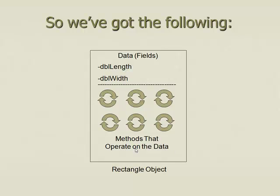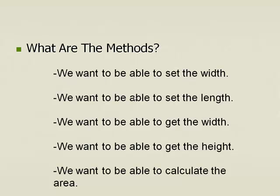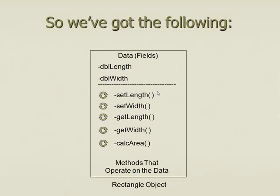Now let's think about our methods that will operate on this data. What are the methods? We want to be able to set the width, set the length, get the width, get the height, and calculate the area. So we've got our setLength method, setWidth method, getLength method, getWidth method, and calcArea method. For example, setLength sets the length, setWidth sets the width, getLength grabs the data in the dbl length variable and returns it, getWidth returns that data, and calcArea takes these two values, multiplies them, and returns the area. These are methods that operate on the data for our rectangle object.